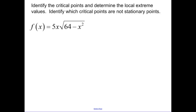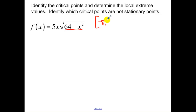Our next example is also slightly challenging because you have to think about domain restrictions. The domain restriction for this function is negative 8 to 8 — if you plug in 9 you get 64 minus 81, which is negative, and you can't square root a negative number. So those endpoints are values we need to evaluate. Let's find the derivative using the product rule and chain rule.